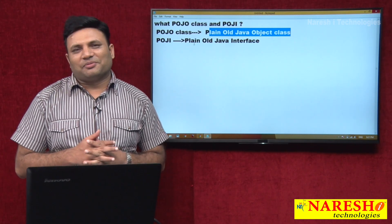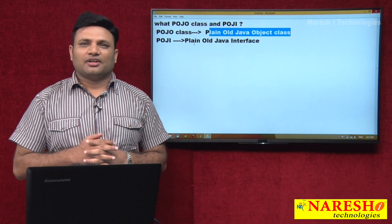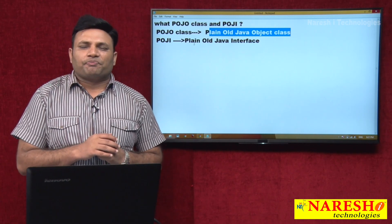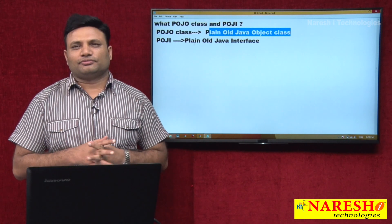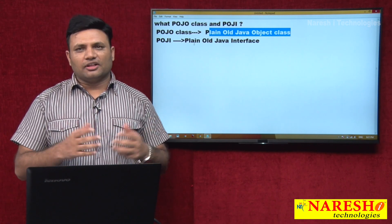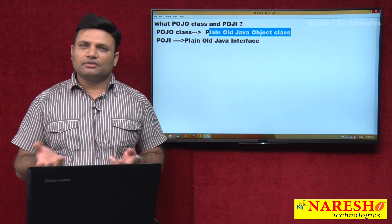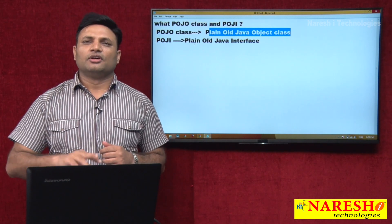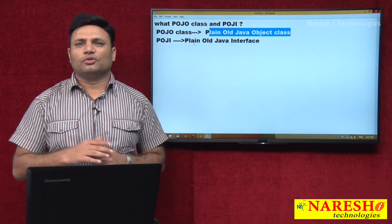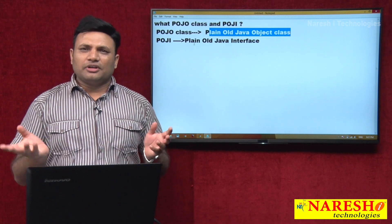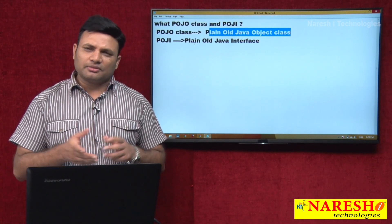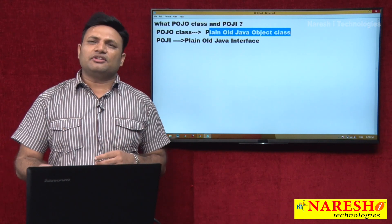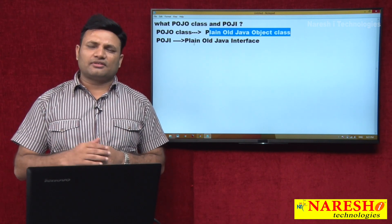Generally I will say something like this: a Telugu guy playing cricket will say 'catch patuko' — 'catch' means holding the ball, 'patuko' also means holding the ball. He says the same word twice. There is no need to tell the same word twice. Similarly, if you say 'POJI interface,' you are indirectly telling the term interface twice.